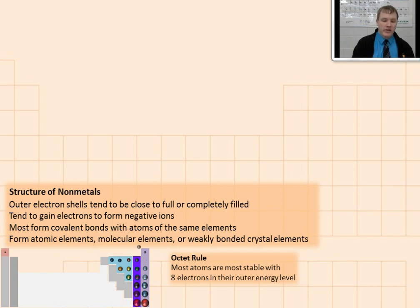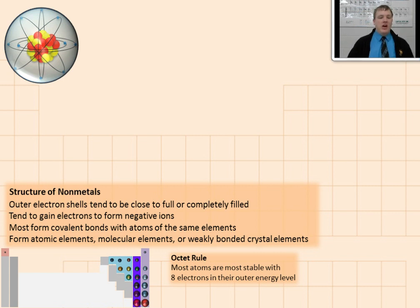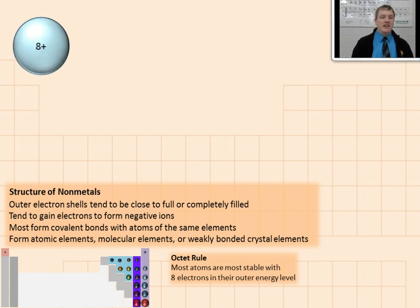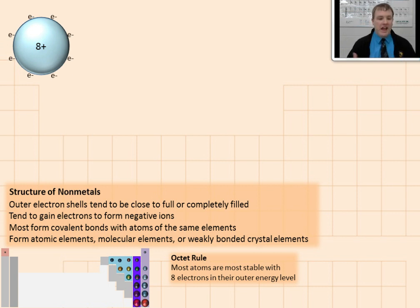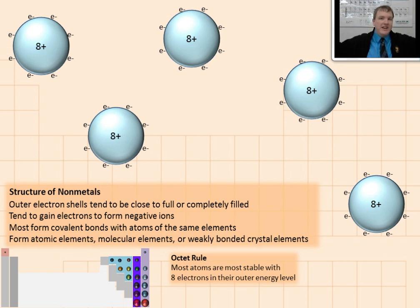Let's pull out one of the noble gases — let's take a look at neon. Here's a neon atom. Noble gases are the way that they are because they actually already have 8 electrons in their outer shell. They don't need to bond with other atoms at all to get 8 electrons. What's that going to cause? These atoms are going to stay completely separate from one another and not bond together at all. That makes neon an atomic element.